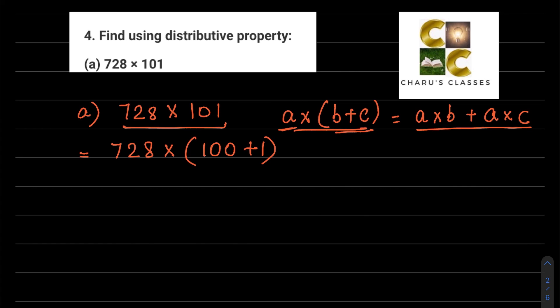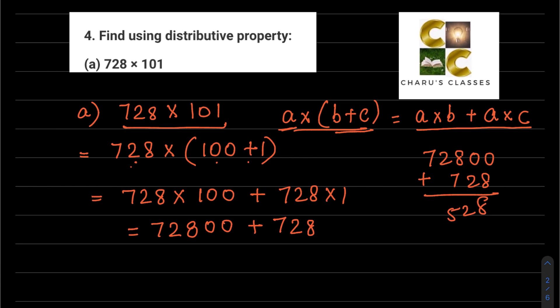Now it's in a into b plus c form, so I can do a into b, that is 728 into 100 plus 728 into 1. 728 multiplied by 100, plus in between, 728 multiplied by 1. So this is 72,800 plus 728. Now we add these together.